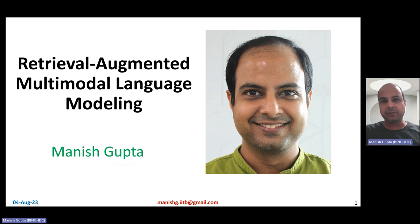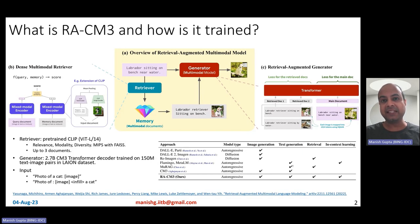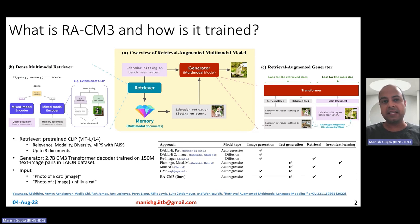Hi folks. My name is Manish Gupta, and in this video I'm going to talk about retrieval augmented multimodal language modeling. So far, we have talked about retrieval augmented generation in various ways for text specifically — RAG, REALM, ATLAS, RETRO. All of those basically process text, but then there is this new model called RACM3.